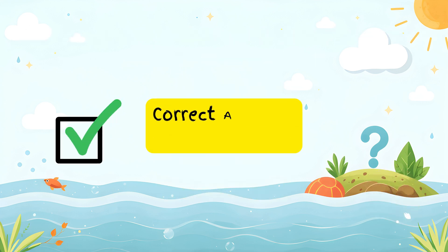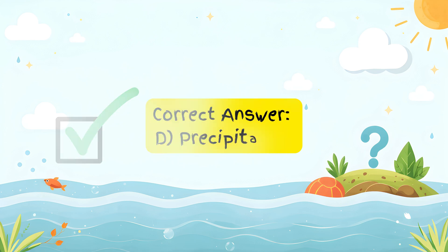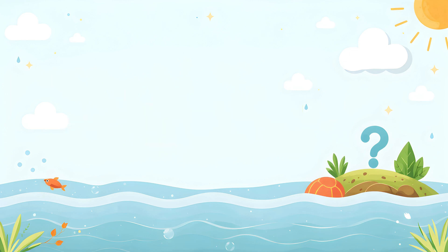Correct answer: precipitation. After precipitation, water collects in rivers, lakes, and oceans, ready to start the water cycle again.